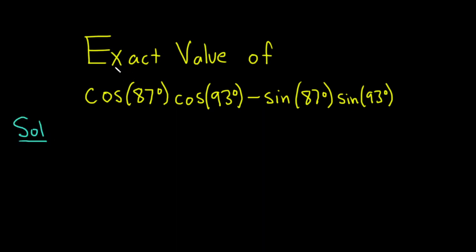The identity we're going to use is this one. If you have cosine of x plus y, this equals cosine x cosine y minus sine x sine y.